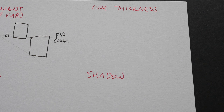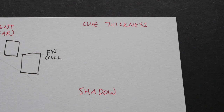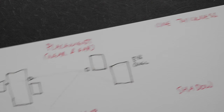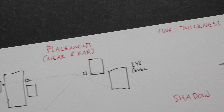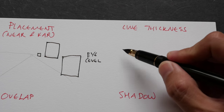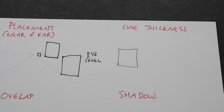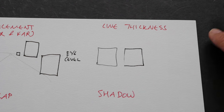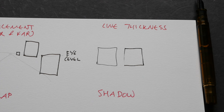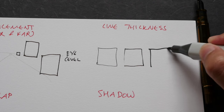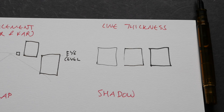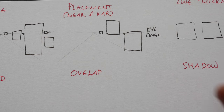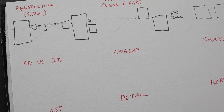The third technique is to use line thickness. Objects that are further away, you can draw them using a thinner line. Objects in the mid-ground, you can draw them with a slightly thicker line. And objects that are much closer, you can draw with a very thick line. At the end of this video, I will show you a sketch that I drew using every single one of these techniques so you can see how they apply when drawing.